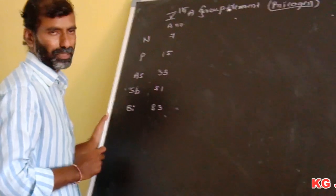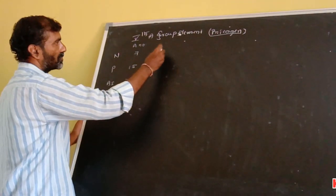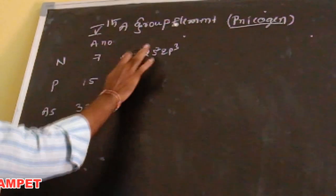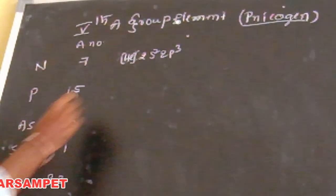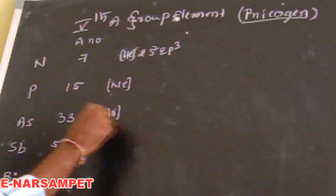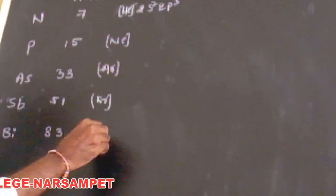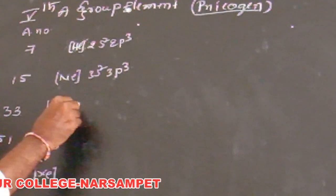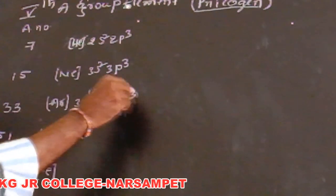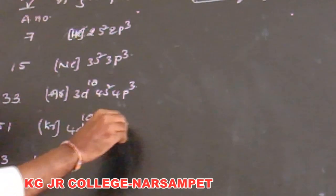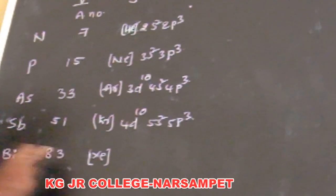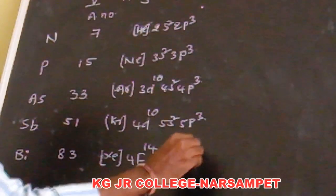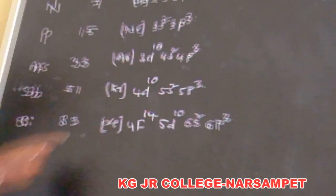The electronic configuration of fifth group elements: nitrogen is 1s2 2s2 2p3. The core configuration corresponds to helium, neon, argon, krypton for successive elements. Arsenic includes [Ar] 3d10 4s2 4p3. Antimony includes [Kr] 4d10 5s2 5p3. Bismuth includes [Xe] 4f14 5d10 6s2 6p3.